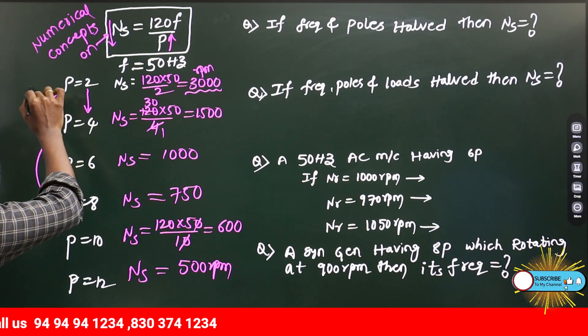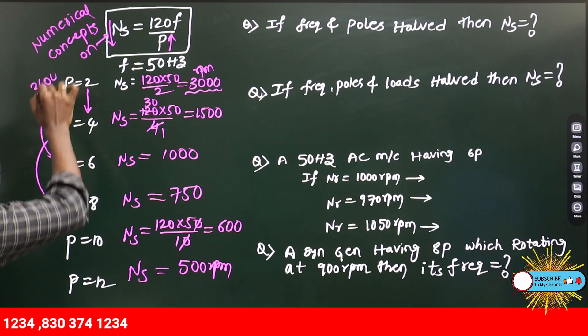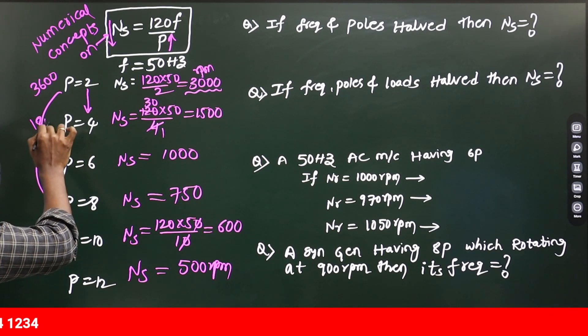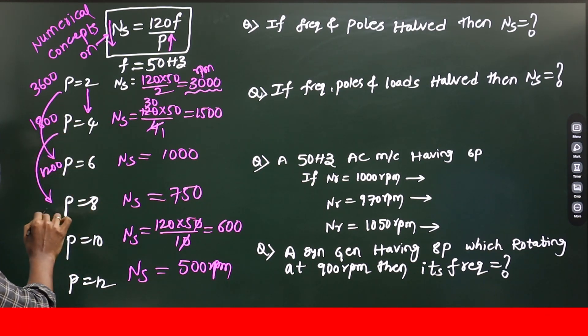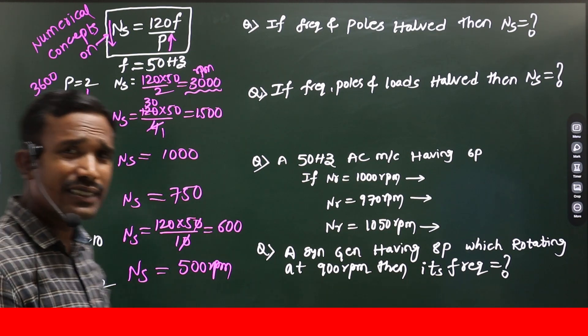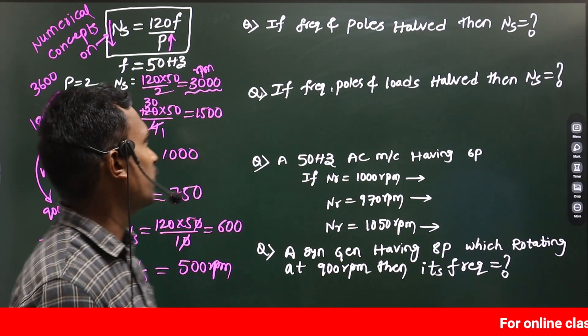For 60 hertz, its value 3600, this value 1800, this value 1200, this value 900, this value 720, and for 12 poles 600. You need to know for 60 hertz also. Okay?